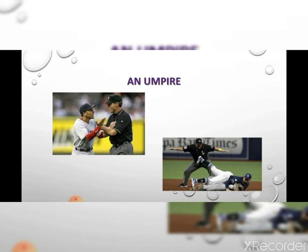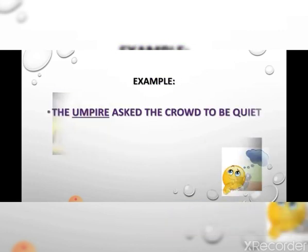An umpire. An umpire is a person whose job is to make sure that a sport match or contest is played fairly and that the rules are not broken. The umpire's decision is final. Example: the umpire asked the crowd to be quiet.